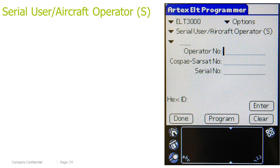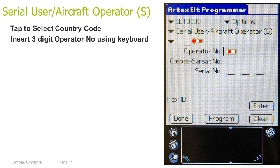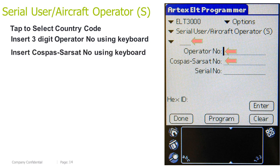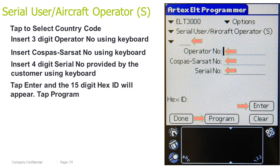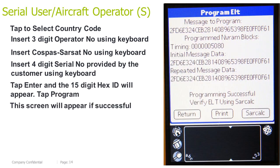Serial user, aircraft operator short. Tap to select country code. Insert the 3-digit operator number using the keyboard. Insert Cospas-Sarsat number using the keyboard. Insert 4-digit serial number provided by the customer using the keyboard. Tap Enter and the 15-digit HEX ID will appear. Tap Program. This screen will appear if successful.